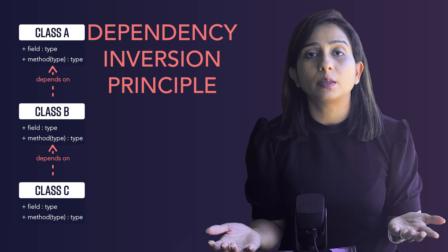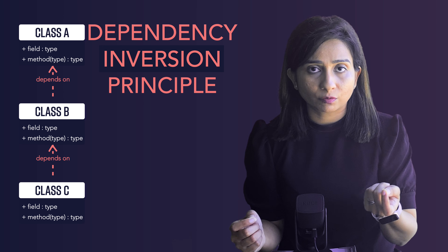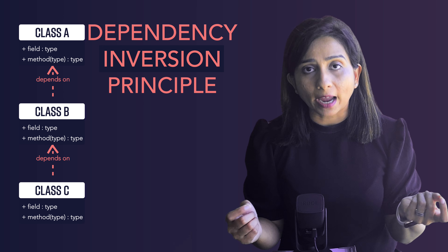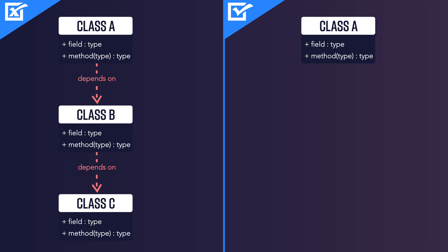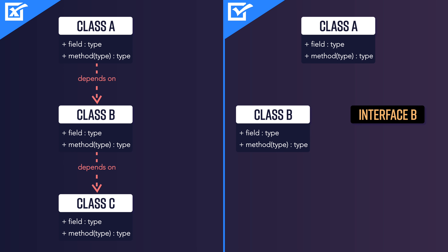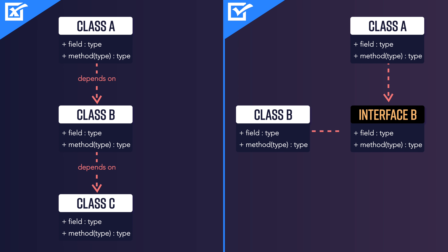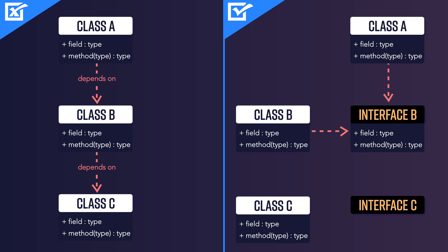Basically, you try to invert the dependencies. The word 'invert' comes from the change in the direction of the arrow once we apply this principle. Instead of class A depending on class B, we introduce an interface which exposes the functions that class B implements. Now class A depends on that interface, and the actual class B also depends on that interface. So the arrow that was going from A to B is now inverted — from class B to interface B. Similarly, we define interface C, which exposes functions implemented by class C, and class B now depends on interface C.